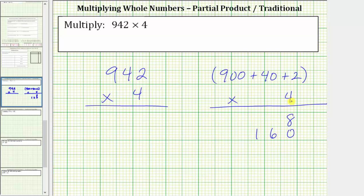The final partial product is four times 900, which is 3,600. The sum of these partial products give us the product of 942 and four.